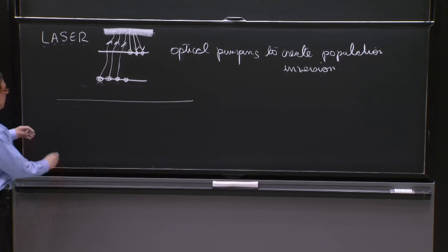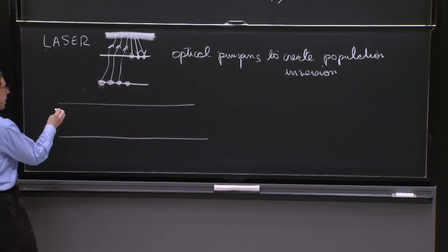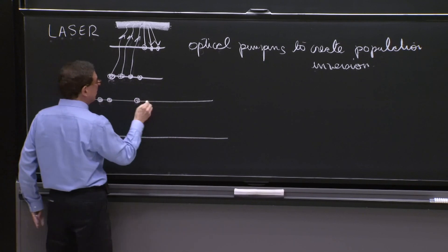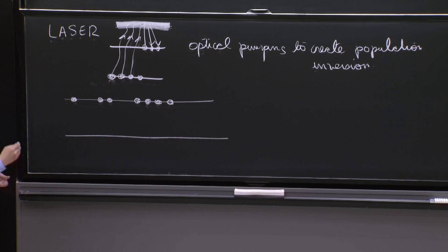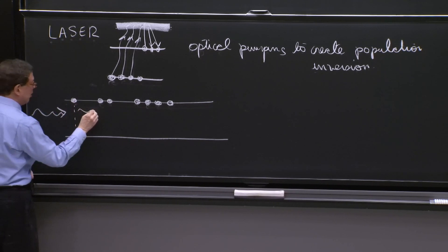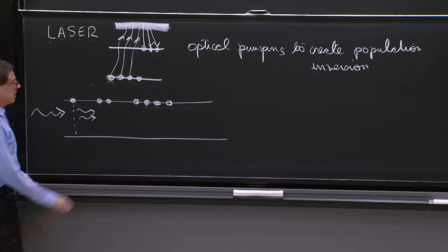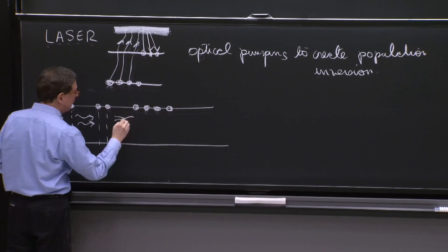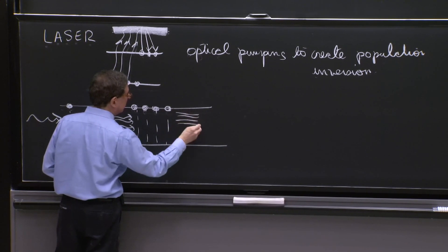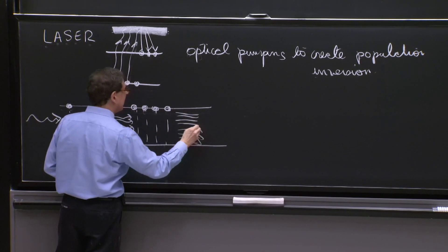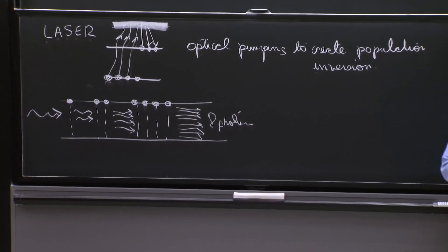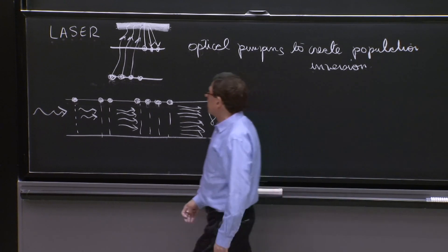And then you now have, say, the levels here. I'm going to draw them this way. It makes it a little easier. I think of one electron here, maybe two here, maybe four here. And then comes a photon and stimulates this electron to go down. And now you have two photons. And they stimulate these two electrons to go down. And now you have four photons. They can stimulate these four electrons to go down. Have now eight photons. Eight photons. And that's the amplification process.